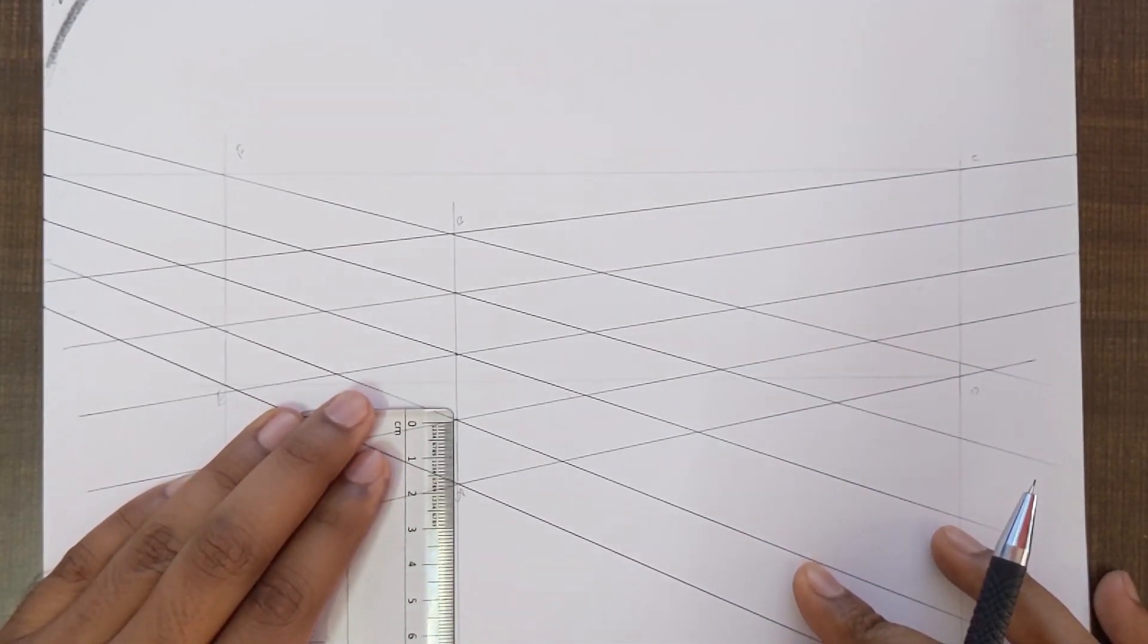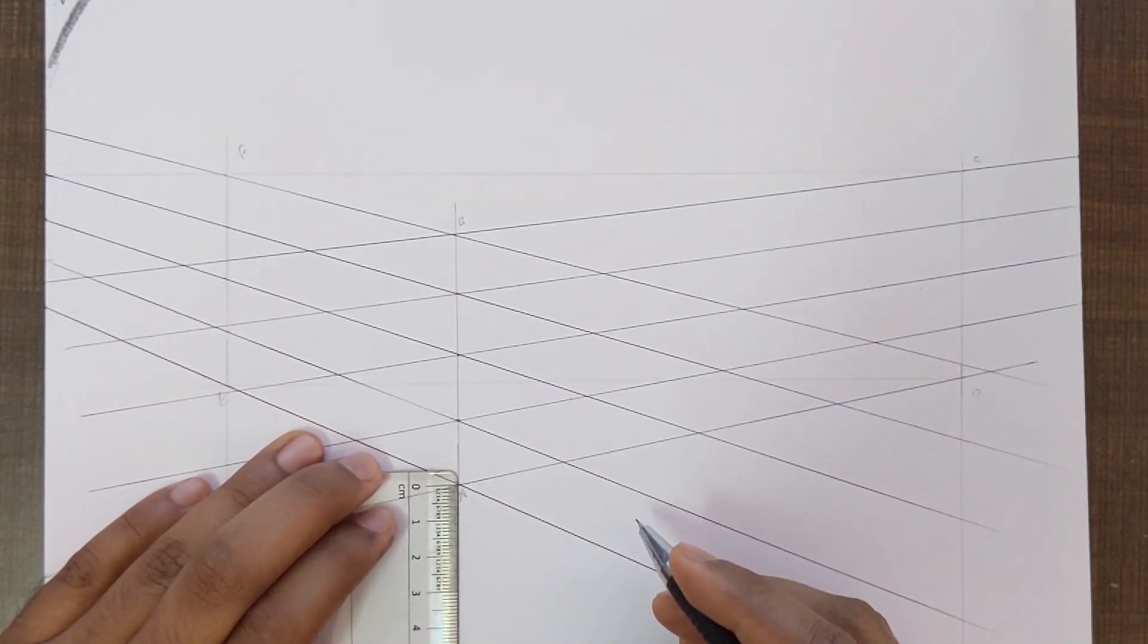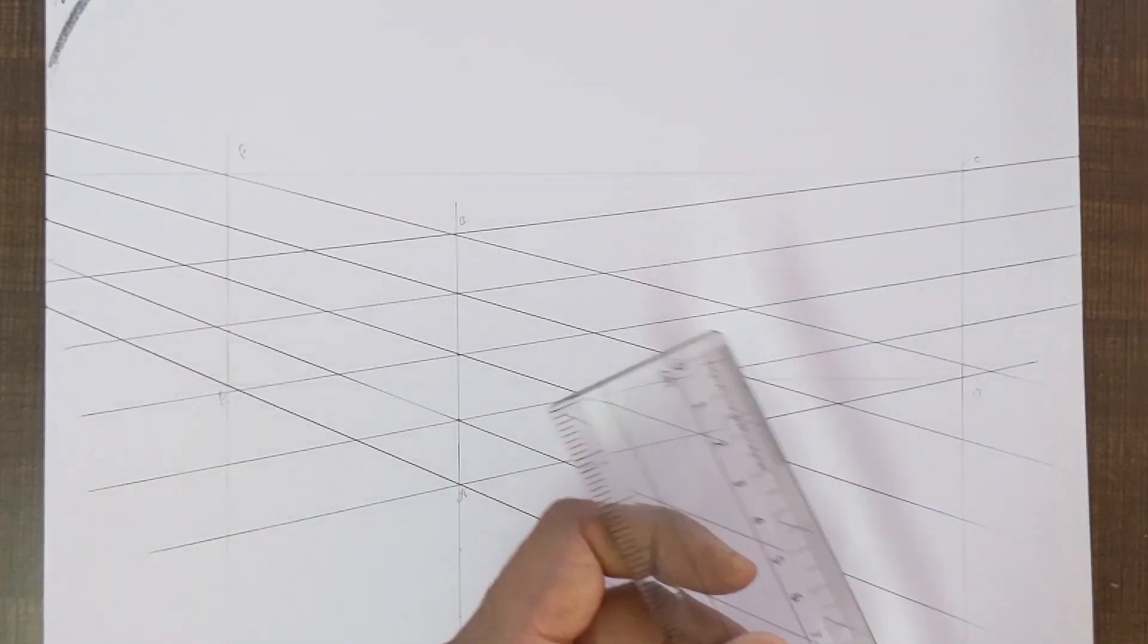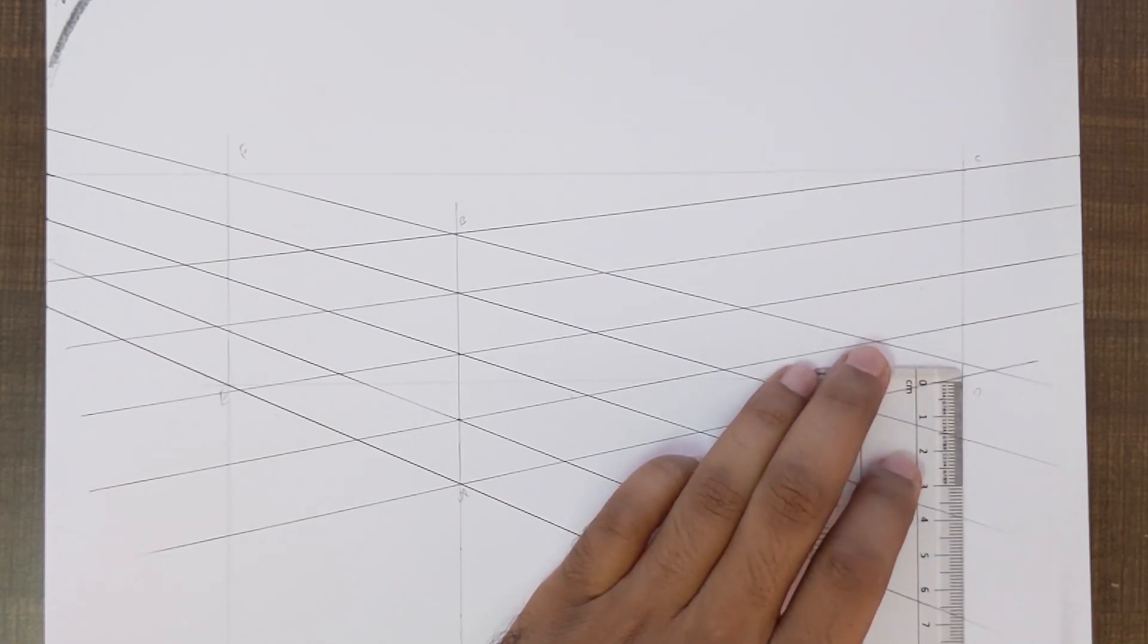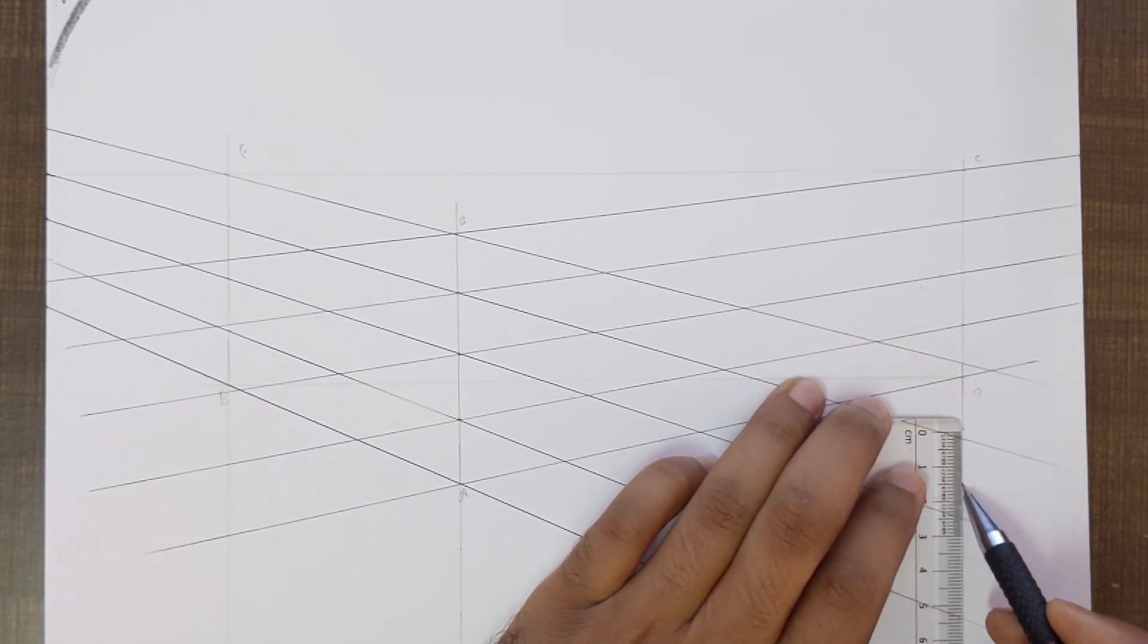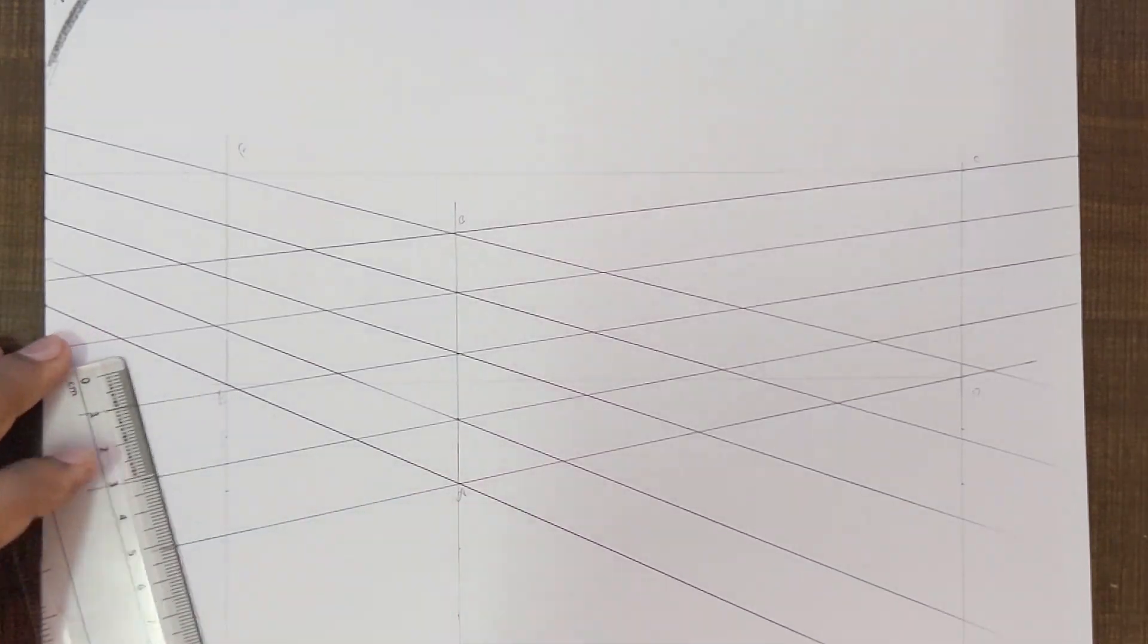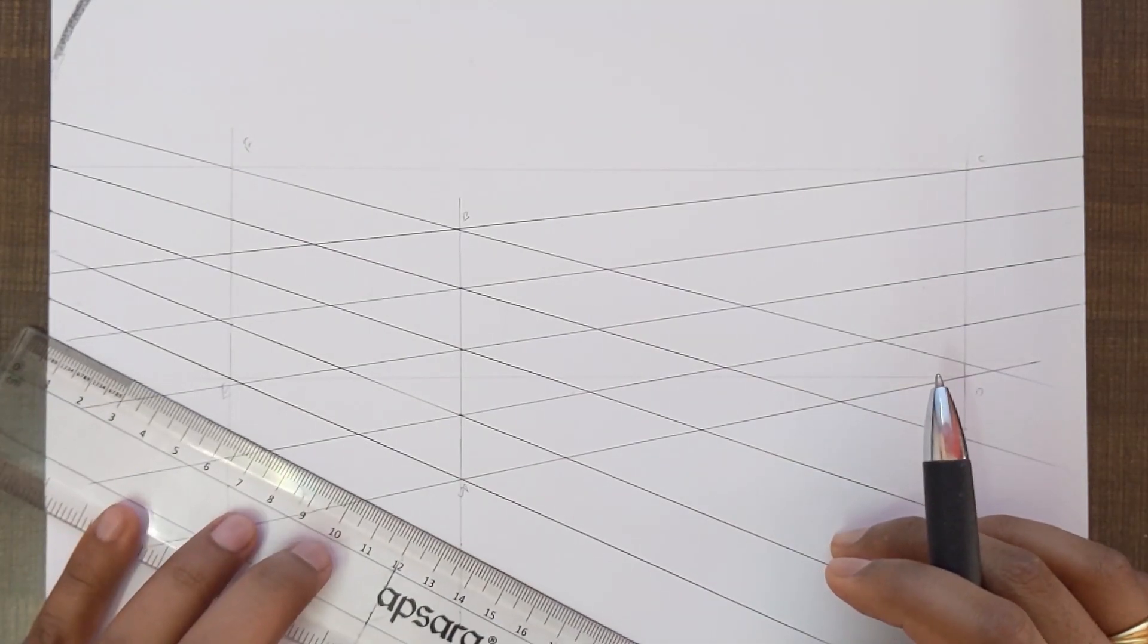Or else you can use a scale for this. It's about 1.8, so over here and over here. We can do the same for these two verticals as well. Once we have these additional set of points, we can go ahead and connect them.